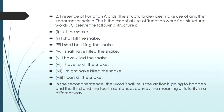The second characteristic is the presence of function words. The structural devices make use of functional or structural words. For example: 'I killed the snake' is a past tense assertion; 'I shall kill the snake' refers to a future event; 'I shall be killing the snake'; 'I shall have killed the snake'; 'I have killed the snake'; 'I have to kill the snake'; 'I might have killed the snake'; 'I can kill the snake'. The use of function words like 'shall', 'might', or 'can' modifies the meaning — 'will' indicates certainty, while 'might' indicates uncertainty.